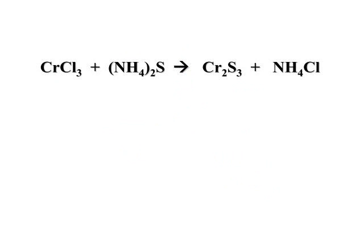Let's look at another straightforward reaction. First we balance our chromiums, then balance the chlorine. Two times three is six chlorine, so putting a six in front of this compound. Moving on to the polyatomic ion, we've got two ammonium ions and six ammonium ions, so putting a three in front of the ammonium sulfide gives us six ammonium ions — and that nicely balances the three sulfides.